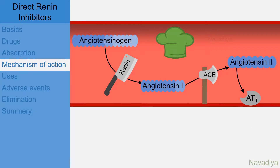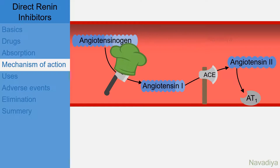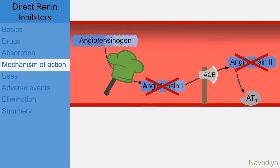Coming to the mechanism of action. As obvious from the name, it inhibits renin, which is the first and rate-limiting step in the synthesis of angiotensin 2. Thus, angiotensin 1 and 2 are not synthesized and all the subsequent effects are lost.